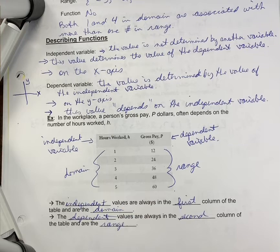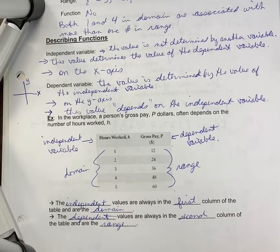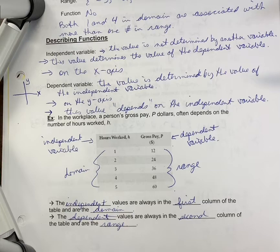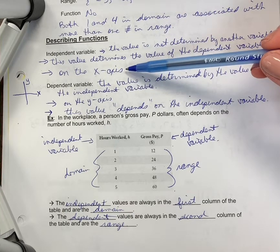We're going to compare them here. The independent variable is the value that is not determined by another variable, so it's independent of anything else. This value determines the value of the dependent variable. It's also the one on the x-axis.